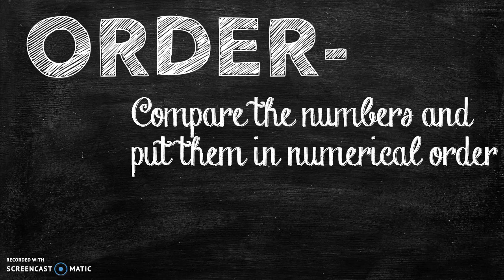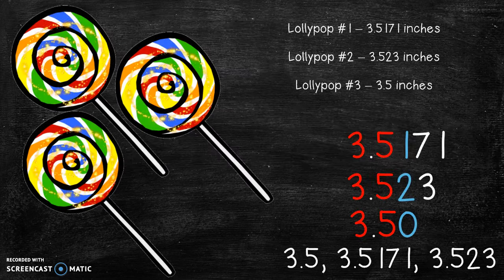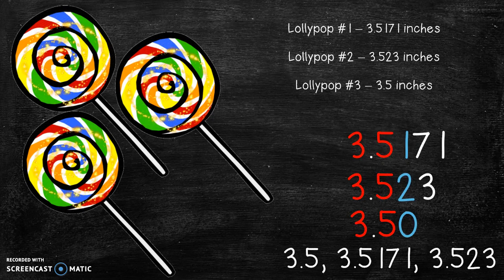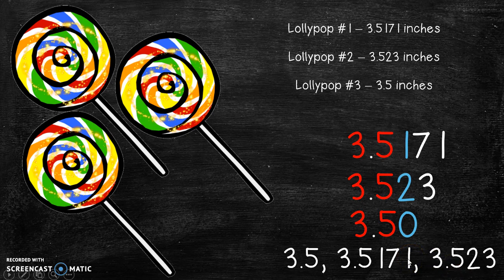Order. You're going to compare the numbers and put them in numerical order. So if you're going to put our numbers in order you don't have to use the greater than or less than symbols. You're just going to start with the smallest and go up to the largest, putting commas in between the numbers. You're just going to put them in order. Smallest to largest in this case, sometimes a question might ask you to do largest to smallest, but in this case we were doing smallest to largest.